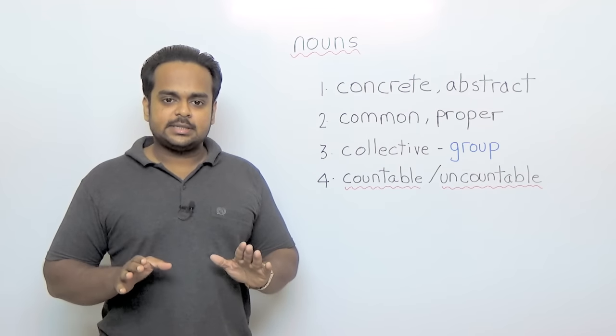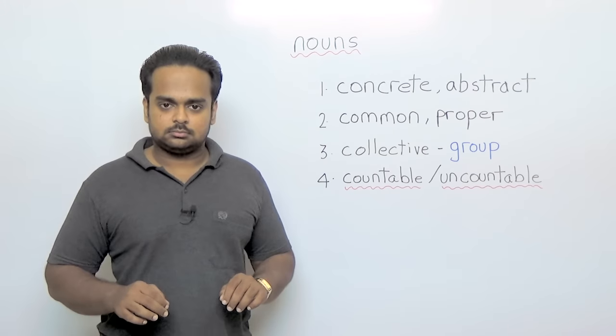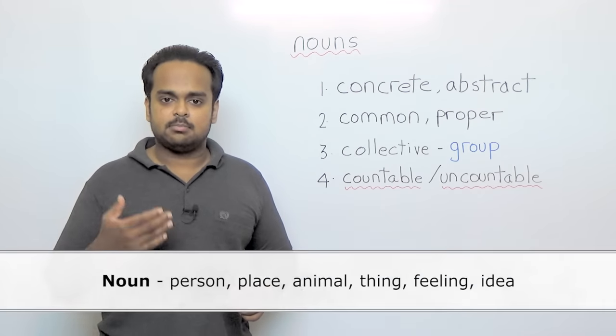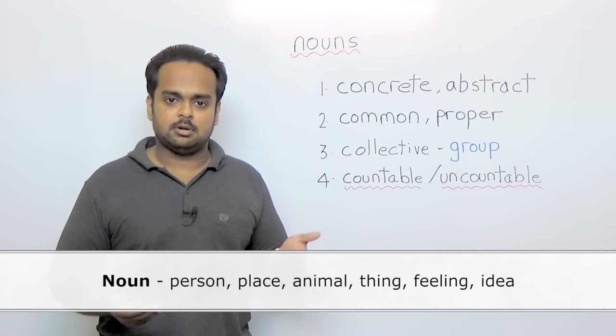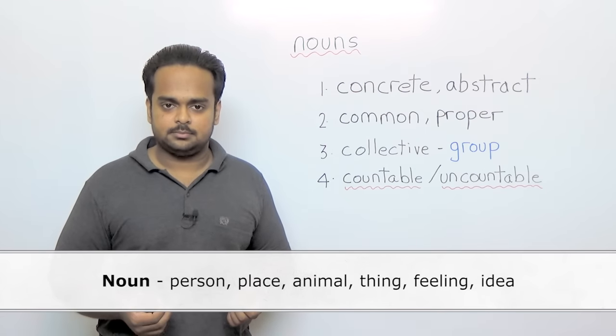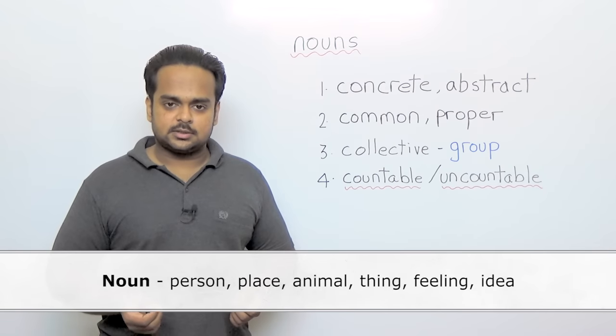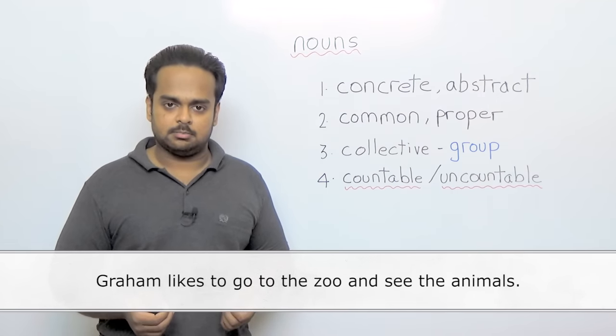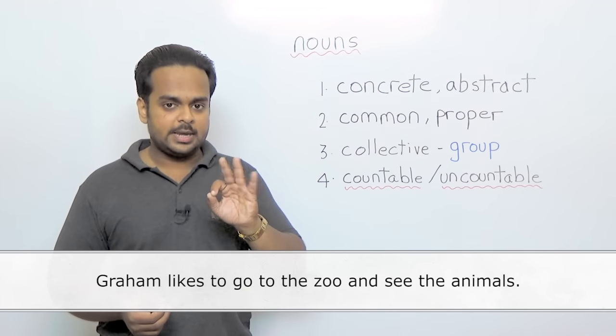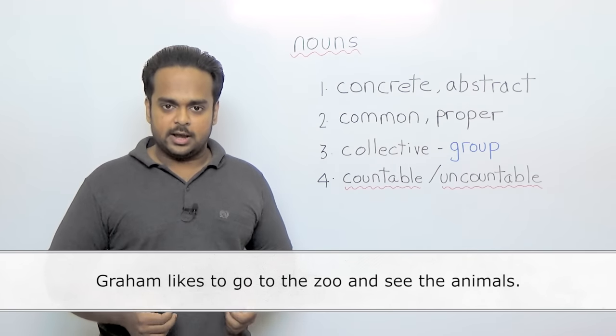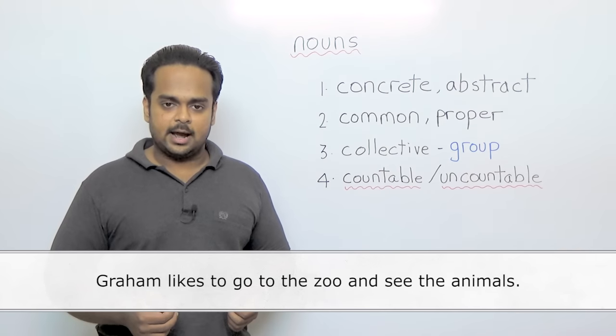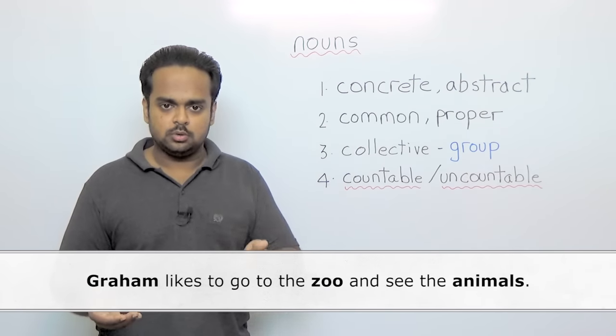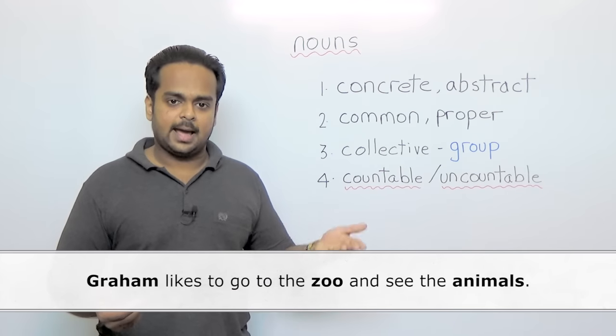So first of all, what is a noun? A noun is just the name of a person, place, animal, thing, feeling, or idea. For example in this sentence: Graham likes to go to the zoo and see the animals. Here there are three nouns. Can you identify all of them? The nouns are Graham, zoo, and animals.